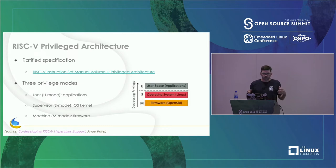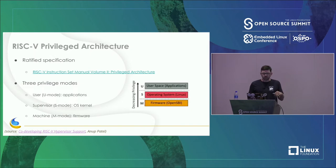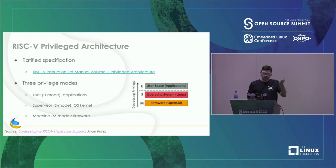The key thing for running an operating system with RISC-V is the privilege architecture, which gives us three modes: machine mode (M mode) where firmware runs, supervisor mode (S mode) where the OS kernel runs, and user mode (U mode) where applications run. As we go up, we lose privilege — U mode can't do things S mode can, and S mode can't do things M mode can.